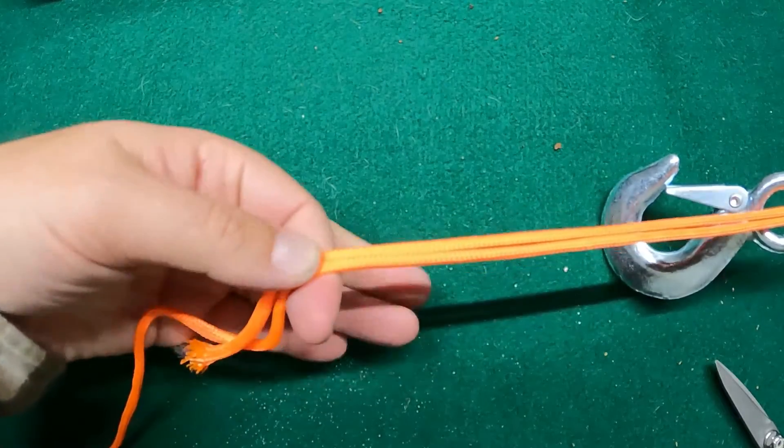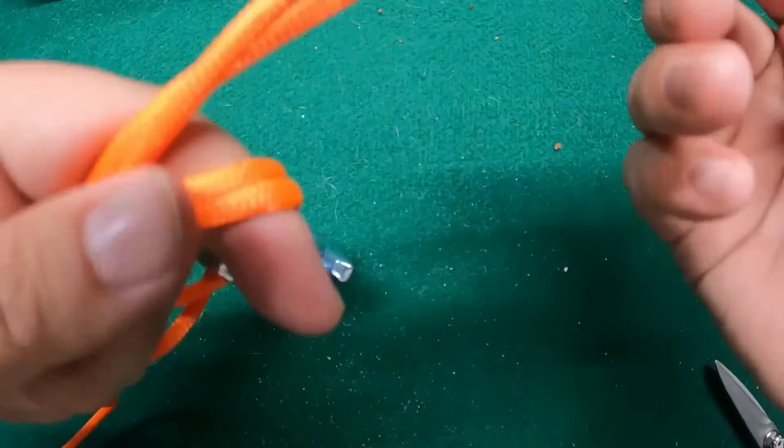You have a loop on one side and you have your tag end and the rest of the line on the other. And you're going to do an overhand knot.